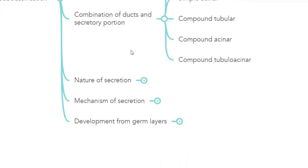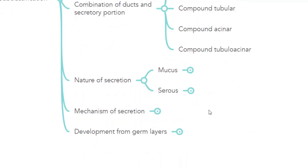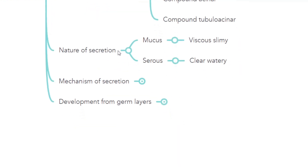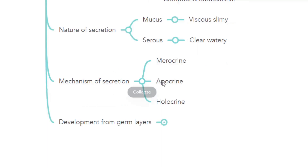Based on the nature of secretion, the multicellular gland is subclassified into mucous and serous glands. In the mucous gland, the secretion is viscous and slimy. In the serous gland, the secretion is clear and watery. Depending upon the mechanism of secretion, it is classified into merocrine, apocrine, and holocrine glands.